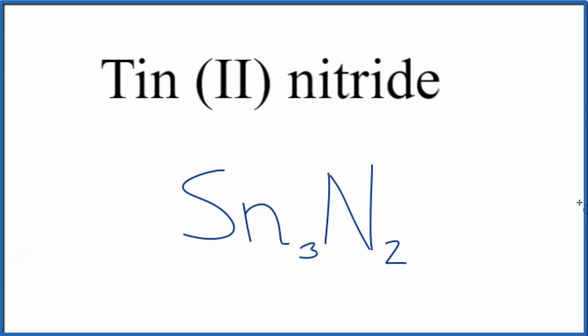Let's check our work, though. We said tin, that has that 2+, and we looked up the nitride 3-. So all of these have to add up to 0. 3 times 2+, that's 6+. 2 times 3-, that's 6-. These two numbers, they add up to 0. Net charge is 0. So this is the correct formula for tin(II) nitride.